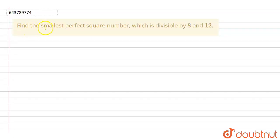In this question, it is given that we have to find out the smallest perfect square number which is divisible by 8 and 12.